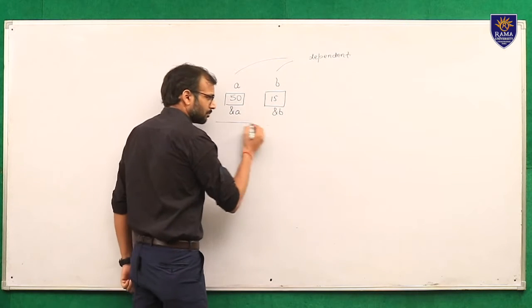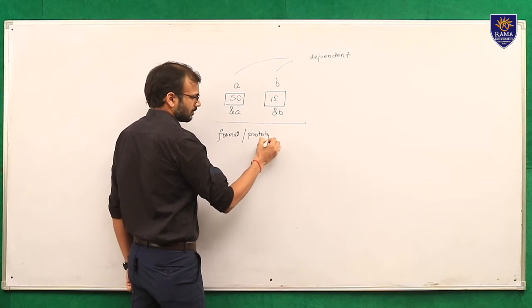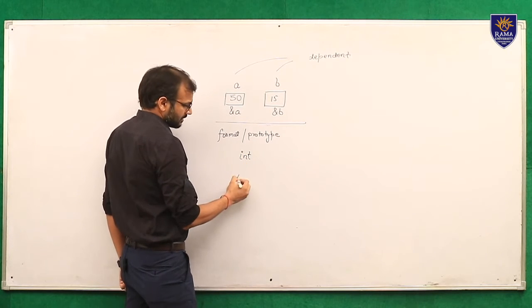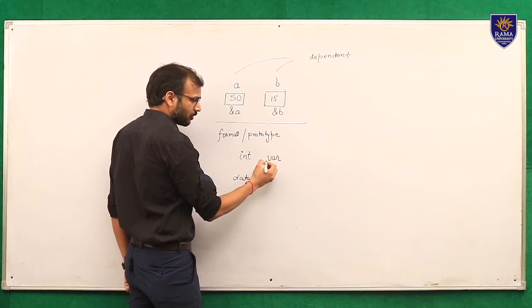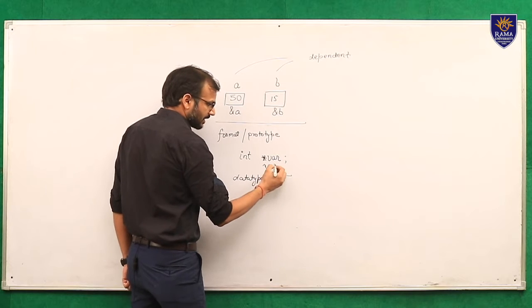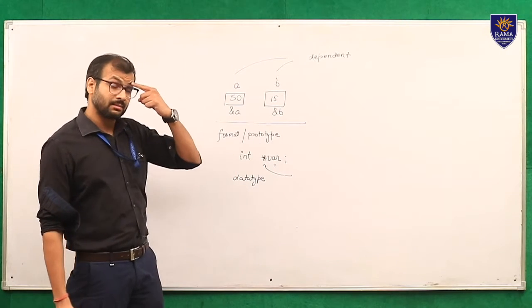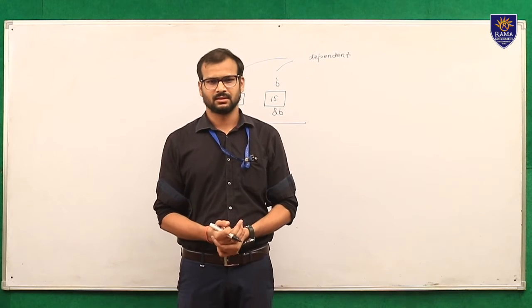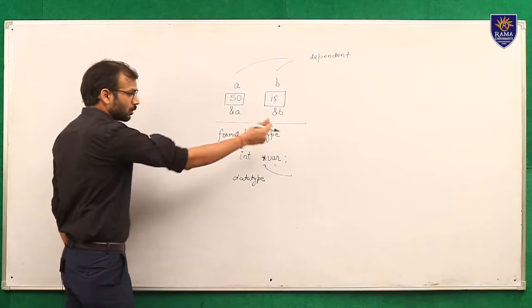The format or prototype of a pointer is: first we write the data type (e.g., integer), then the variable name, and before the variable name an asterisk symbol is marked. This asterisk indicates that this variable has been declared as a pointer variable. A pointer variable has two features: first, it does not have its own address, because it points the address of another variable. The variable whose address it is pointing — both variables will become dependent.